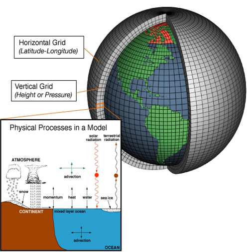Most models include software to diagnose a wide range of variables for comparison with observations or study of atmospheric processes. An example is the 2-meter temperature, which is the standard height for near-surface observations of air temperature. This temperature is not directly predicted from the model but is deduced from surface and lowest model layer temperatures. Other software is used for creating plots and animations.